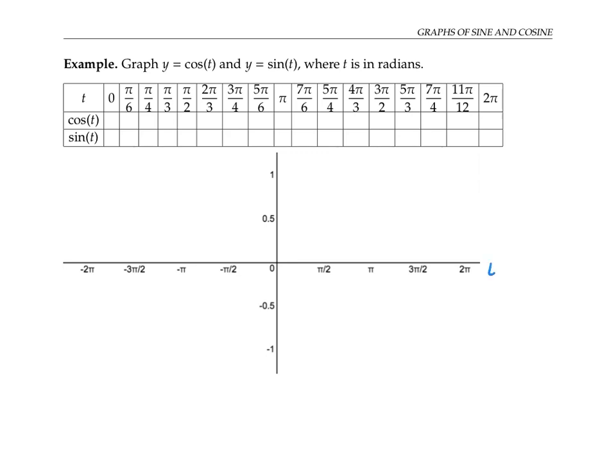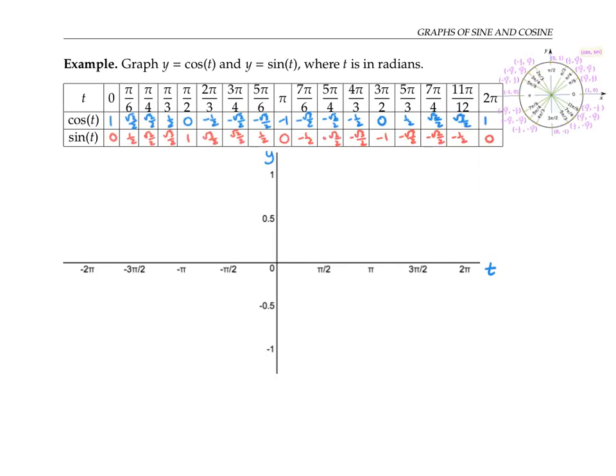I'm going to think of this being the t axis, and this being the y axis. One way to do this is to plot points. So I'll fill in this chart using my knowledge of special angles on the unit circle. These points will be easier to graph if I convert them all to decimals.